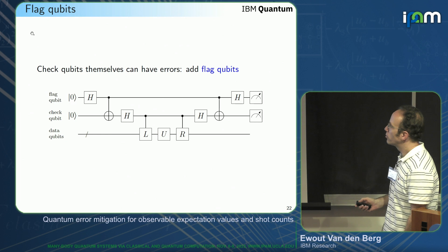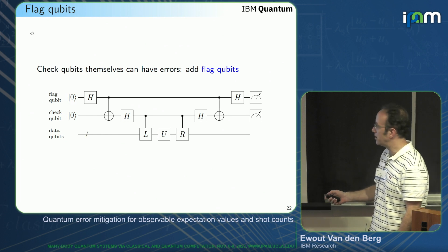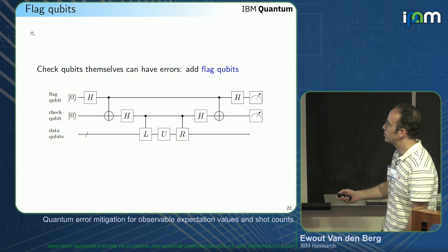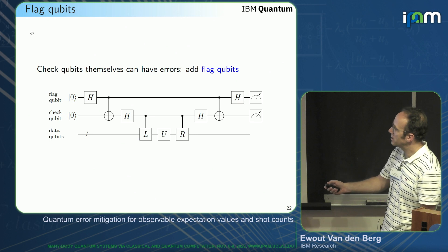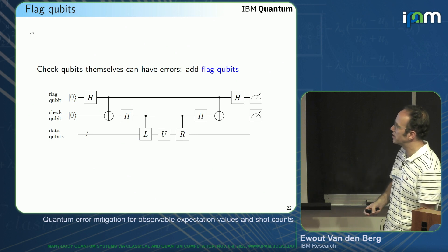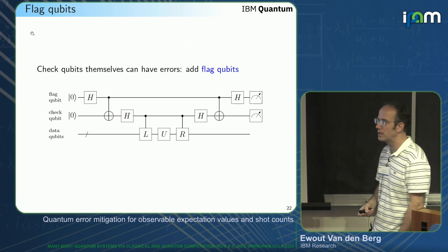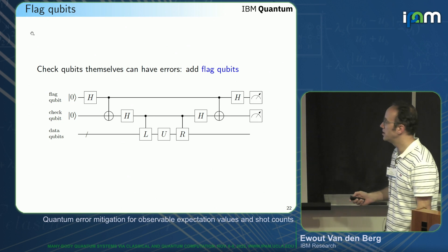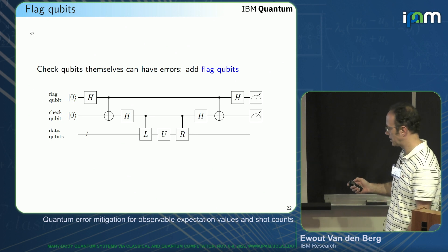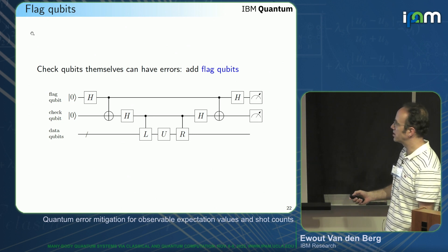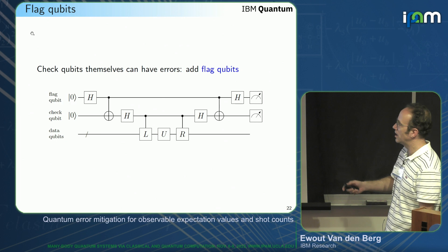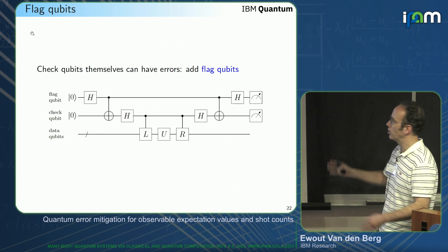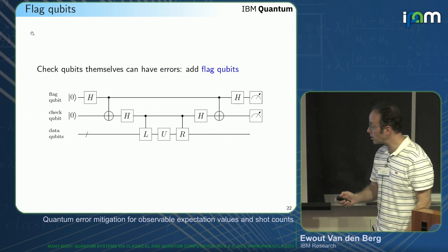Of course, the check itself could also have errors. You can add another small check on the check as a flag qubit for extra sanity. This is just an extension — you can view it as a specific Pauli check on top of your already-checked circuit.